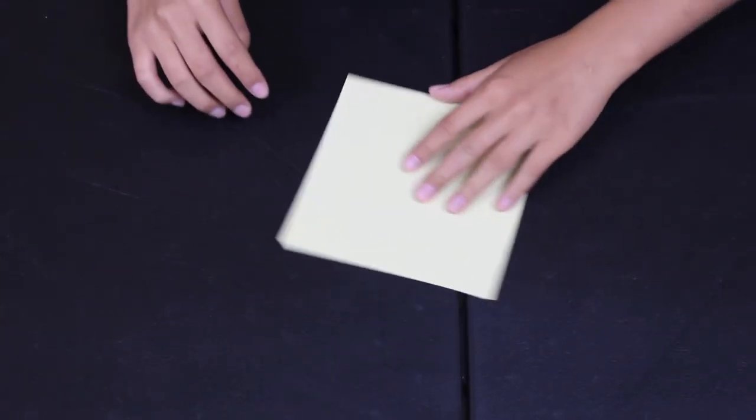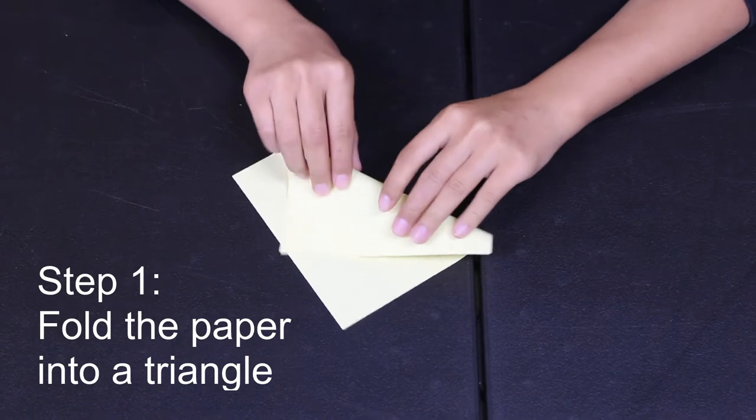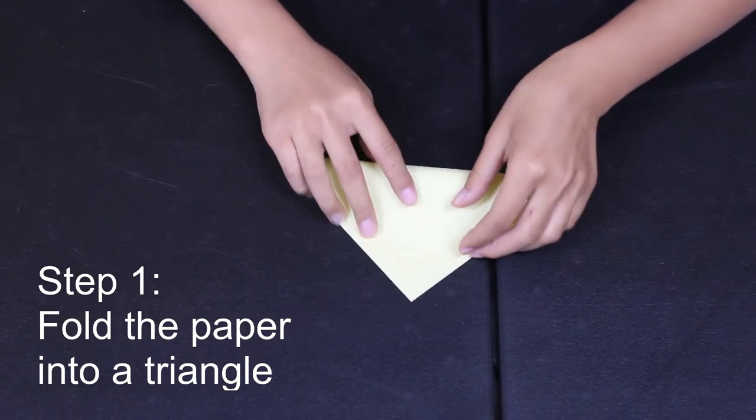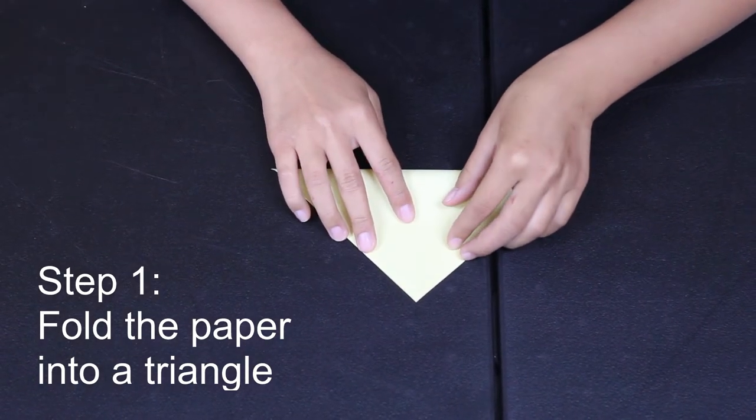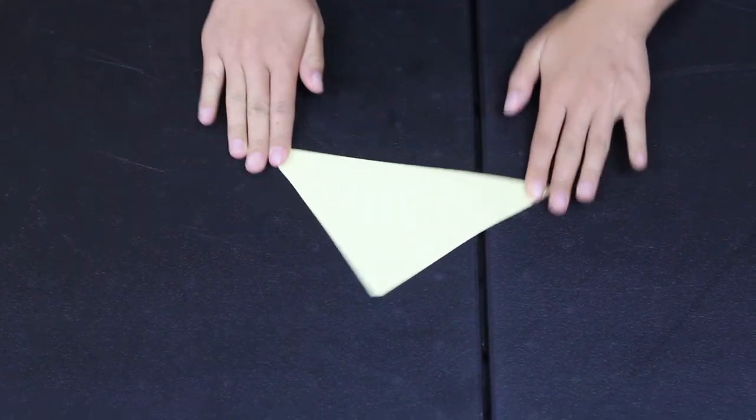The first thing we're going to do is take one piece of paper and fold it into a triangle. Try to line up the edges as nicely as you can but it's okay if it's a little off. Press down firmly on that crease to make sure it is crisp.